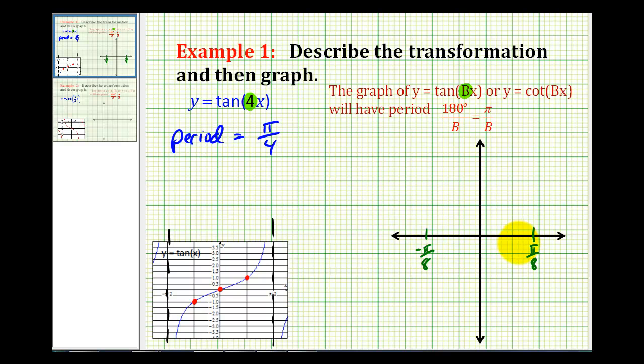And then we'll divide this interval into four equal parts. So this would be pi over sixteen. And this would be negative pi over sixteen. And we'll also have vertical asymptotes at negative pi over eight and positive pi over eight.